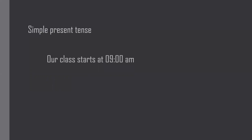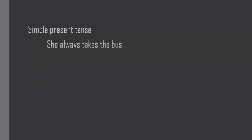'Our class starts at 9 AM,' 'my duty starts at 8 o'clock,' 'the bus is at 9 o'clock every day' — these are scheduled things. To express a scheduled action, we use simple present tense. Similarly, 'she always takes the bus' — this expresses frequency. To express frequent actions, we also use simple present tense.